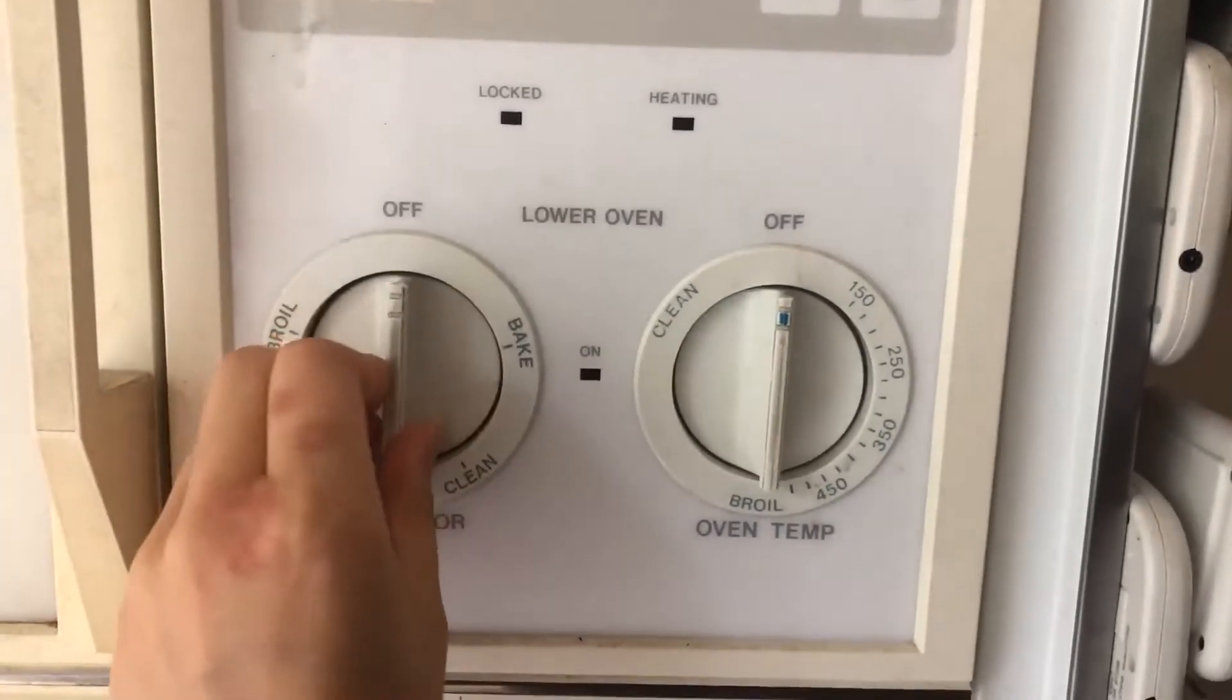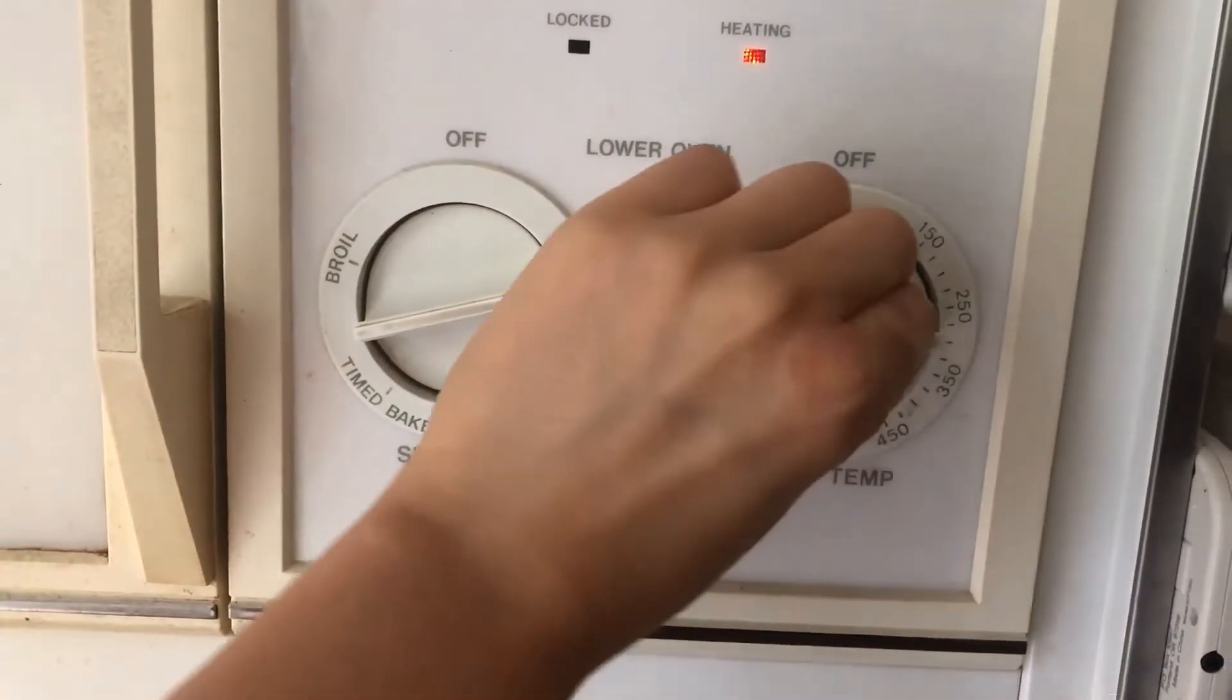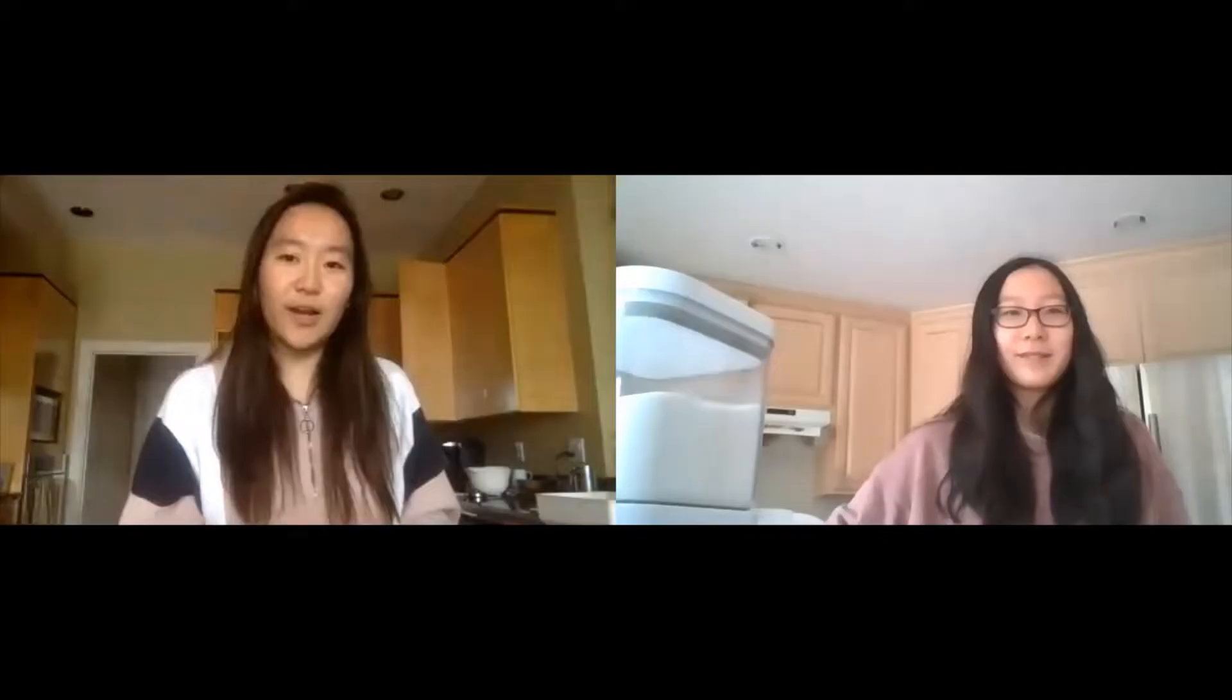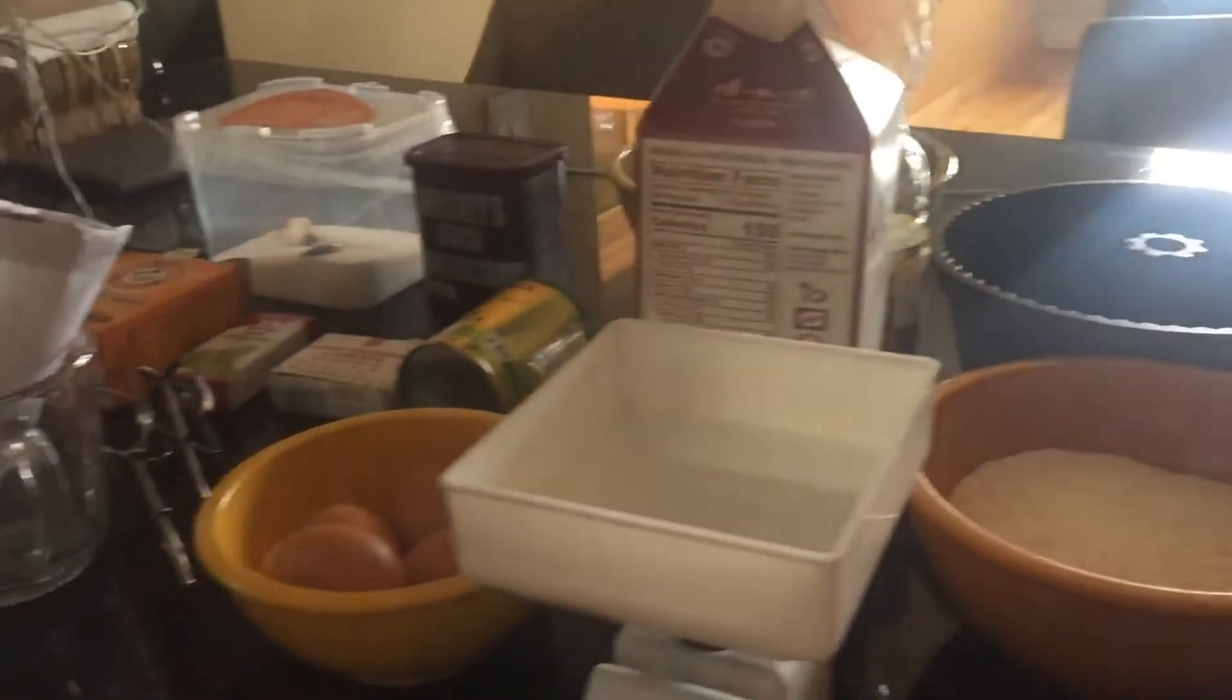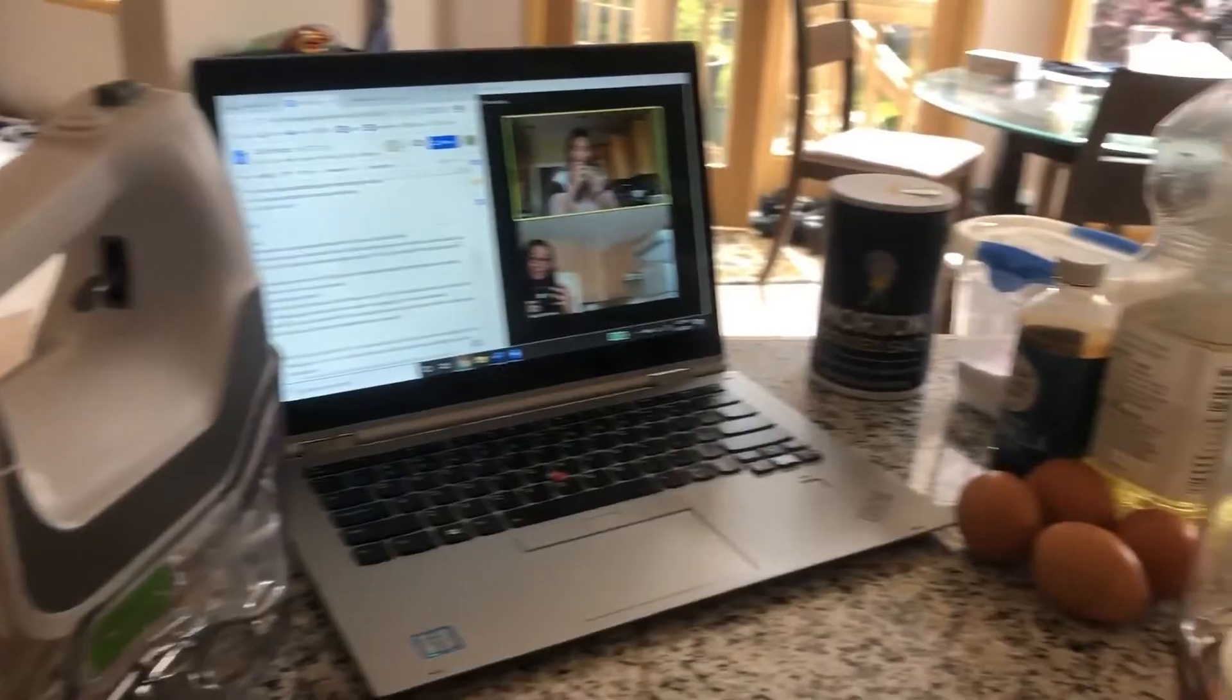First, preheat your oven to 350 degrees Fahrenheit and gather your ingredients. Mix your dry ingredients in a bowl.